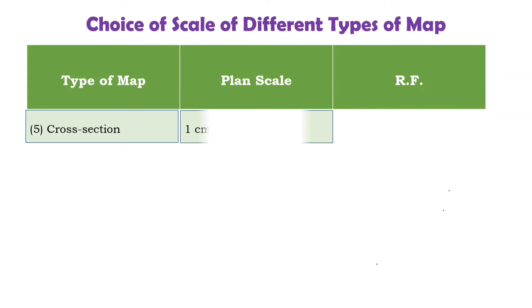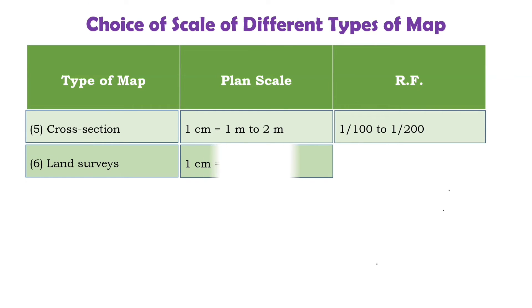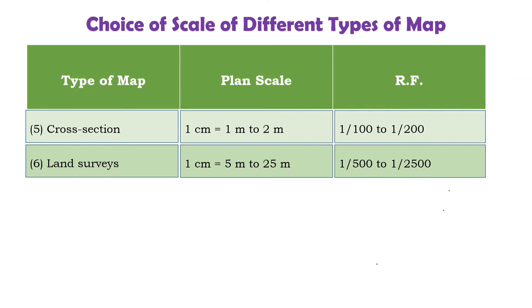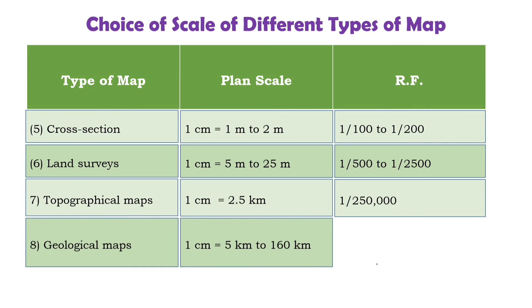For cross sections, the plane scale is 1 centimeter equals 1 to 2 meters, with RF of 1 in 100 to 1 in 200. For land survey, the plane scale chosen is 1 centimeter equals 5 meters to 25 meters, with RF of 1 in 500 to 1 in 2,500. For a topographical map, the scale is 1 centimeter equals 2.5 kilometers, with RF of 1 in 2,500,000. For a geological map, the plane scale is 1 centimeter equals 5 kilometers to 160 kilometers, with RF of 1 in 5,00,000 to 1 in 1,60,00,000.